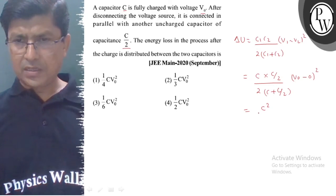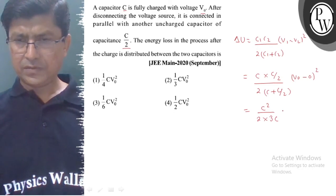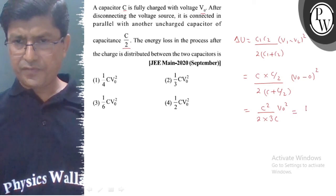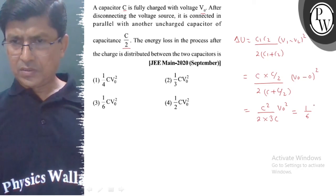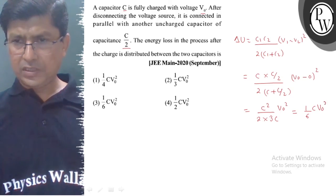...C squared upon 2 into 3C, C/(4 into 3) V0 squared, or it equal ho jayega 1 upon 6, C V0 squared.